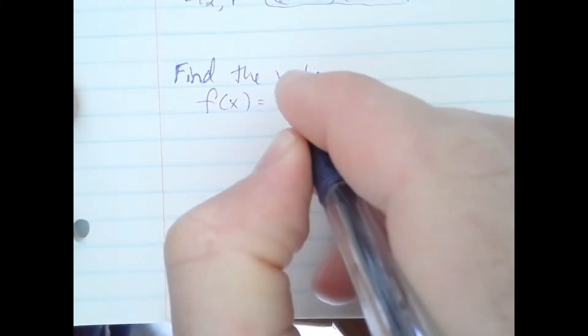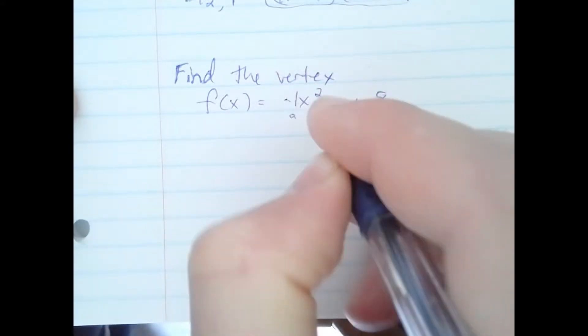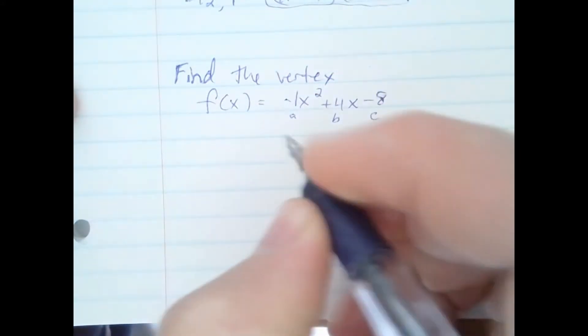Notice the a, b, and c number. a is negative 1, b is 4, and c is negative 8.